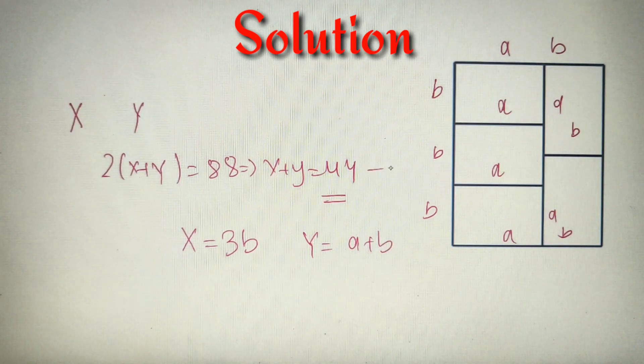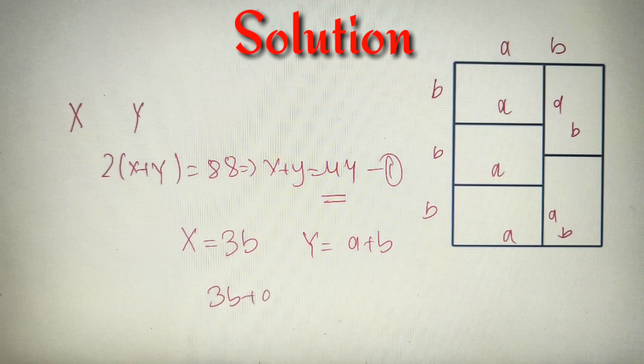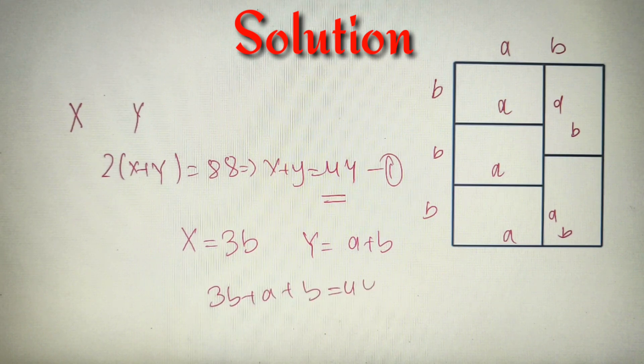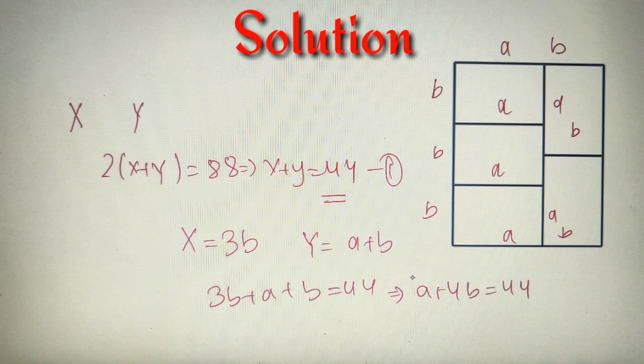If I put it in equation number one, I will get 3B + A + B = 44, or I can say that A + 4B = 44. So I've got my first equation as A + 4B = 44.